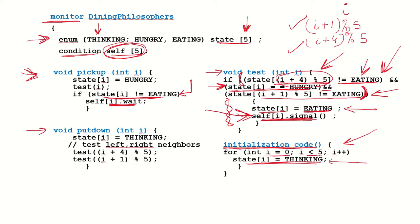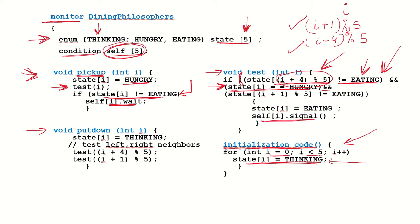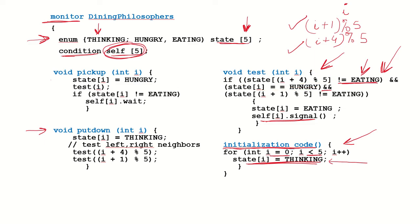So at any point when a philosopher wants to eat, it invokes the pickup function, sets its state to hungry, then checks whether the neighbors are eating. If the neighbors are not eating, it sets its state to eating and signals its self condition variable. If the neighbors are eating, the process invokes the wait operation on self and is suspended. Assuming both neighbors were not eating, the state of this philosopher is set to eating.